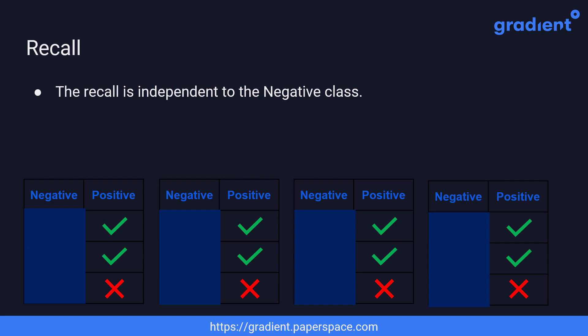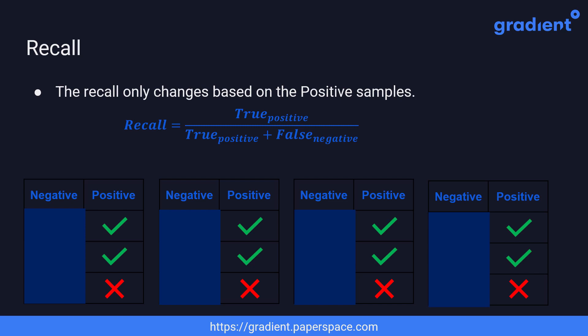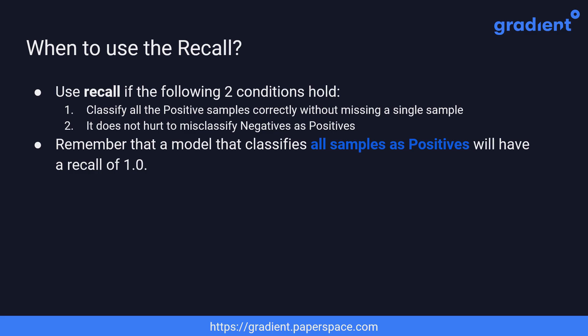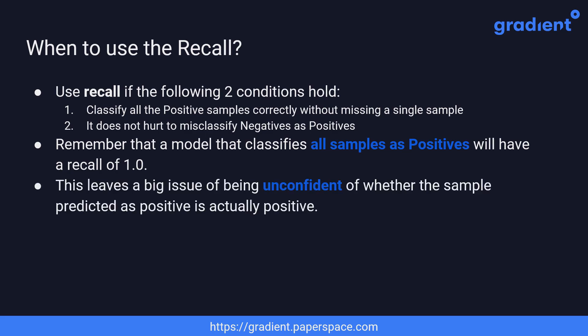Regardless of how the negative samples are classified, the recall won't change — it changes only based on positive samples. If all positive samples are classified correctly, the recall reaches its maximum of 1.0. You should use recall if you want to classify all positives correctly without missing a single positive sample, even if it means misclassifying all negatives as positives. However, recall has a big issue: it is unconfident about whether a sample classified as positive is actually positive.